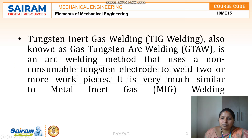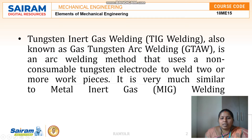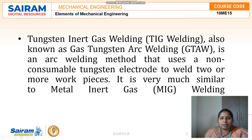The first one is TIG welding. TIG is expanded as Tungsten Inert Gas welding, which is also known as Gas Tungsten Arc Welding. It is a type of arc welding which uses a non-consumable tungsten electrode.